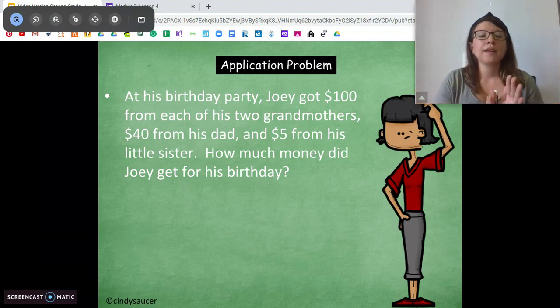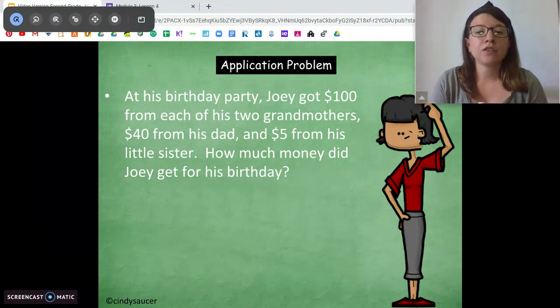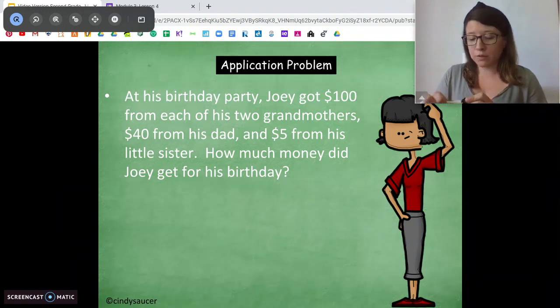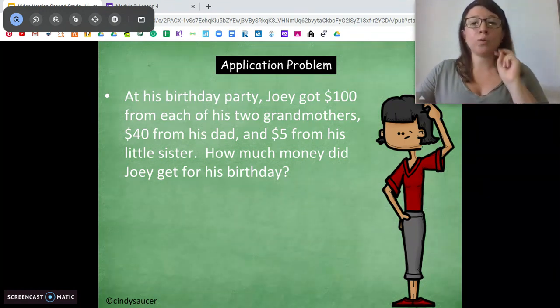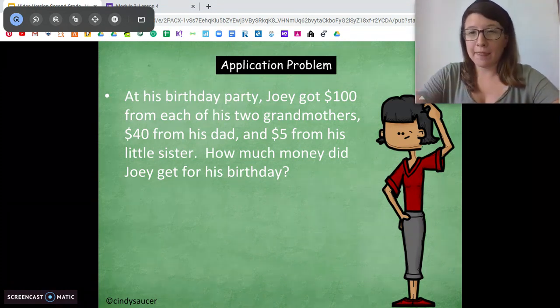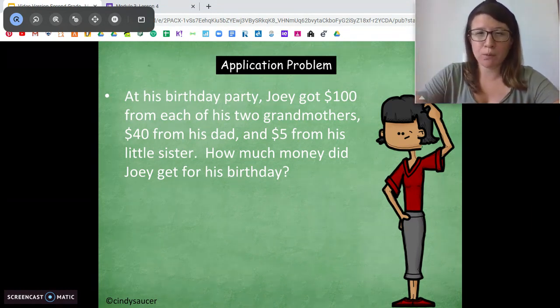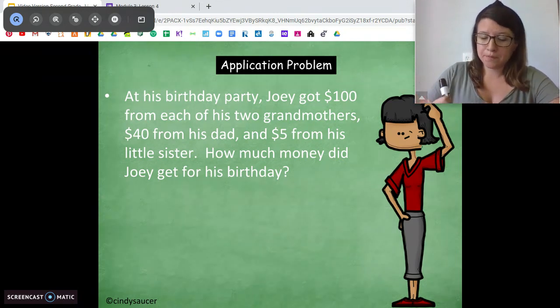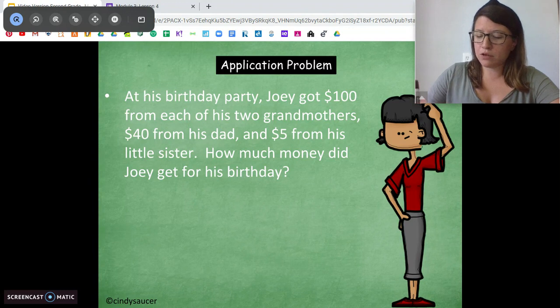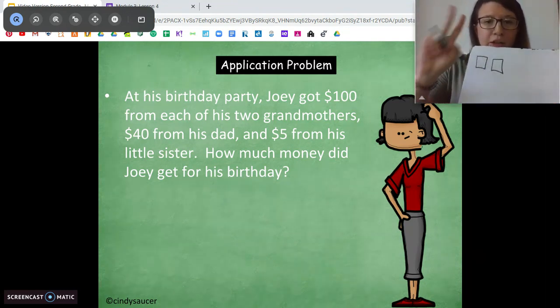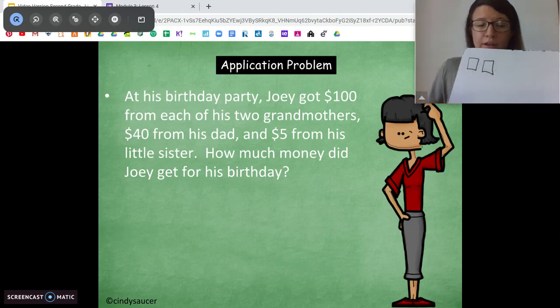Okay, so let's talk about it. It says, Joey got $100 from two of his grandmothers. So he got $100 from two of his grandmothers. So he got two sets of $100. How can we draw that? What shape would we use to represent 100? Yeah, a square. So I'm going to draw two squares. $100, $200, because he got two sets of $100.